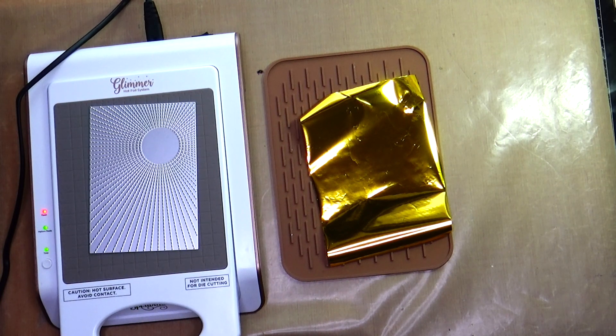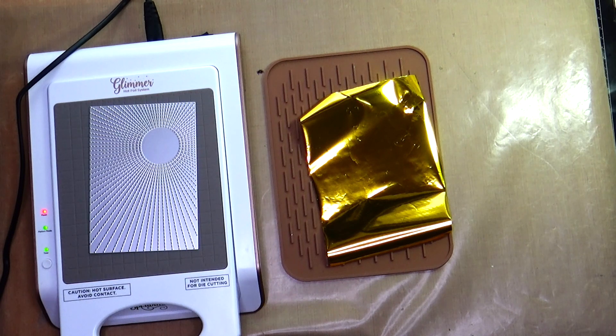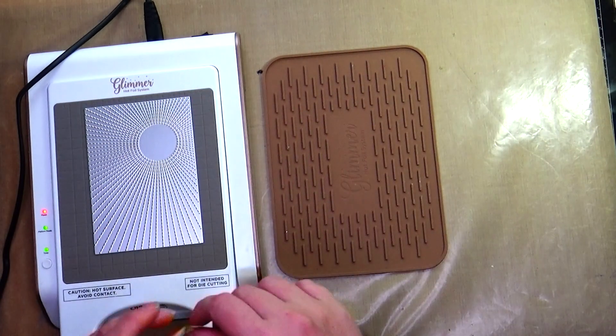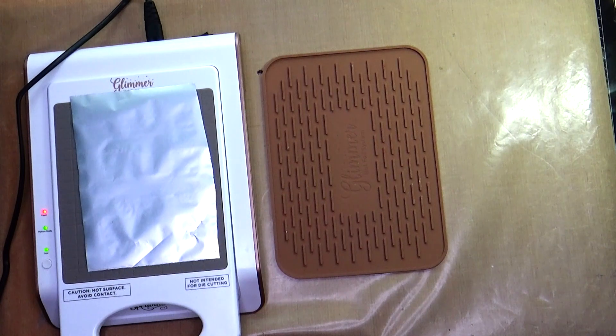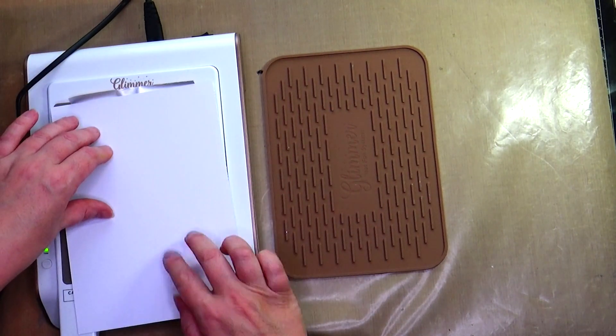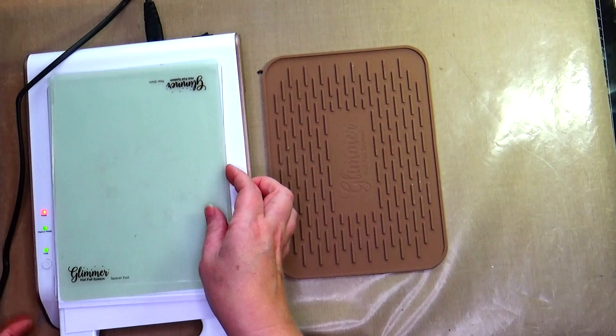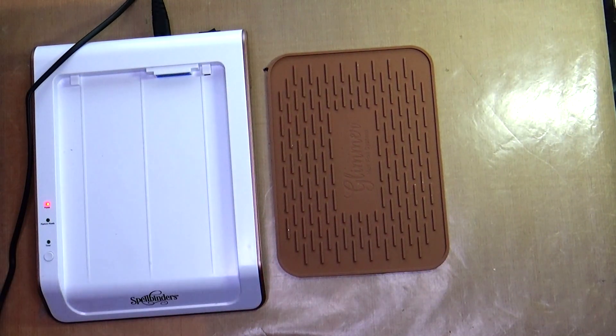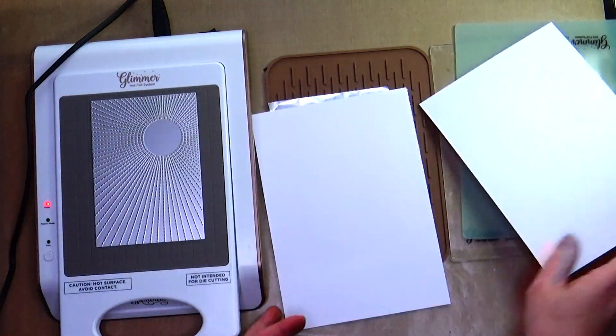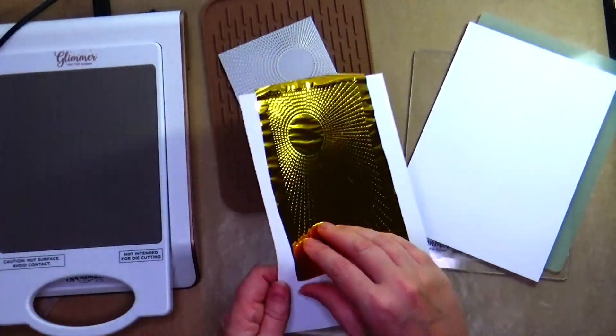You can also use the patterns plate with a hot foil machine. Add the plate with the pattern facing up on the hot foil machine. When it is warm enough, put the hot foil on the plate. Place your cardstock facing down on top of that and add the two plates. Die cut with your die cutting machine. Remove the foil.